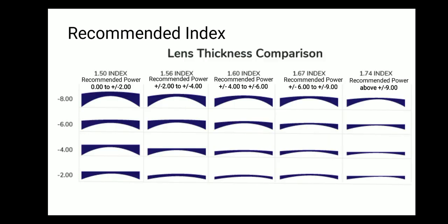To keep it simple, I have a recommendation chart showing different indexes — 1.5, 1.56, 1.6, 1.67, and 1.74 — matched with different power ranges. From plano to plus or minus 2, you can stick with 1.5 index (basic CR-39). From minus 2 to minus 4, use 1.56 index. For plus or minus 4 to plus or minus 6, use 1.6 index. For plus or minus 6 to plus or minus 9, use 1.67 index. Anything above 9 would be in 1.74 index. These are recommendations for guidance purposes.